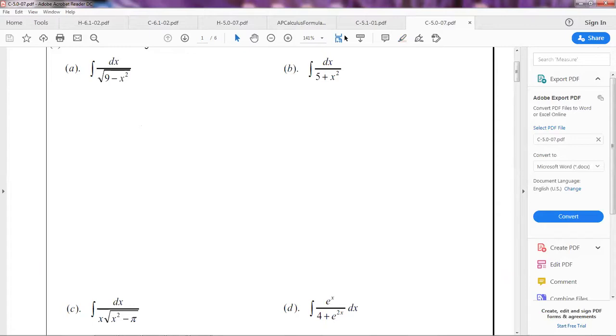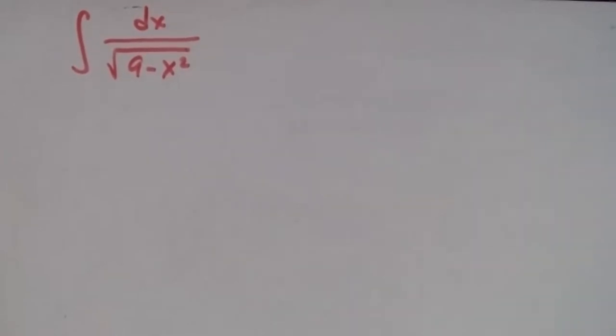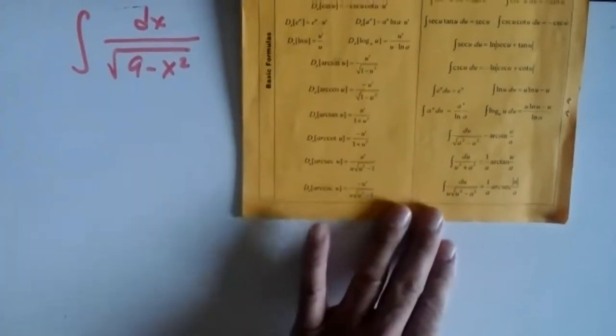The integral is dx over the square root of 9 minus x squared. I need to check my formula booklet. At the end we have the formula chart, and I try to find something similar to this one. Remember, you're not going to find exactly the same thing — just something similar. I have a fraction, so I look for formulas with fractions. The one with a square root is what I need.